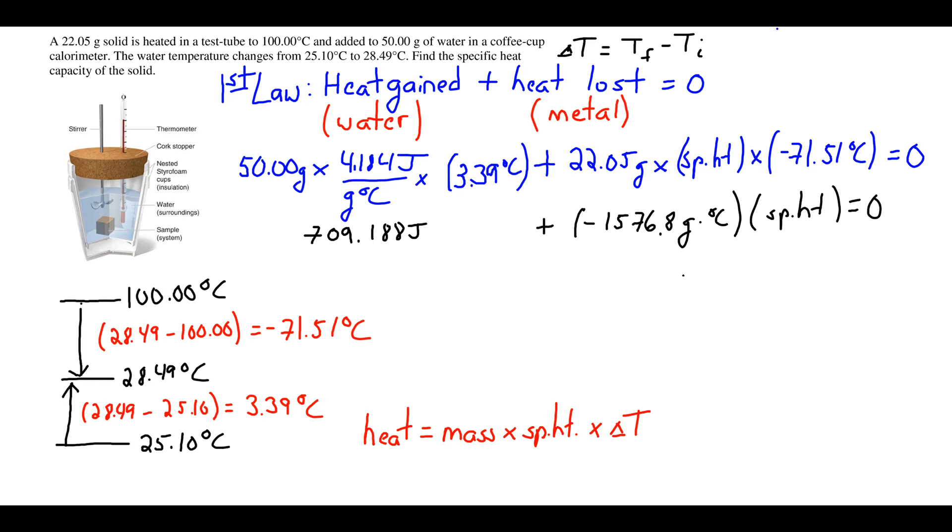We set up our multiplication. We have the mass of water times the specific heat of water times its temperature change, which equals 709.188 joules. For the metal, we have the mass of the metal times our temperature change, multiplied by the specific heat. The sum of these equals zero.